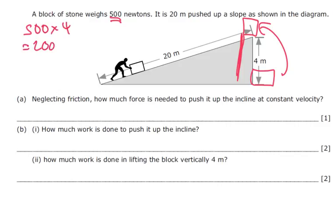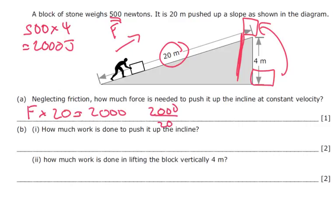Now our chap here is going to have to use the same amount of energy but he's got a larger distance. So he's going to use less force. So the force times by 20 is going to equal 2000. So 2000 over 20 is going to equal F which equals 100 Newtons.